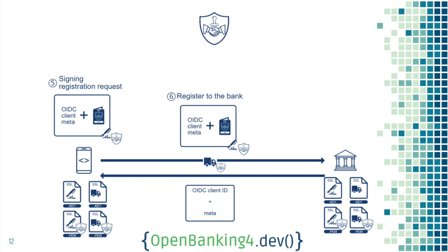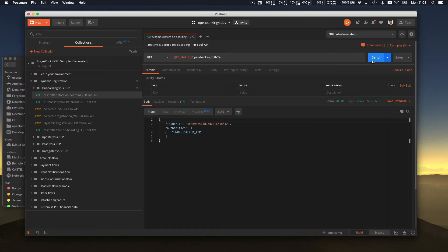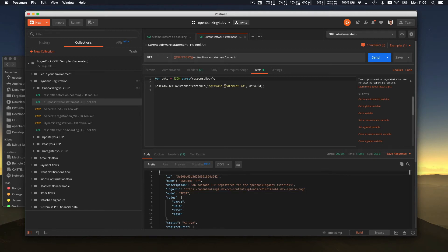The bank will verify that everything is consistent and return the dynamic registration response. In this response, you get the client ID. The OIDC client ID is like your identifier — your username — for your TPP. Let's do that in practice with the Fortrock Mock Bank. Let's go back into Postman. If you haven't followed the tutorial about how to set up Postman, I recommend you do it first. As a result of that tutorial, you should have your certificates set up and be a recognized and registered TPP.